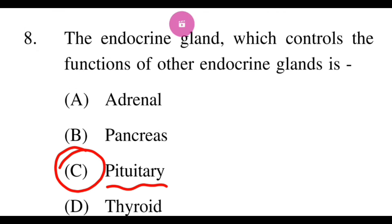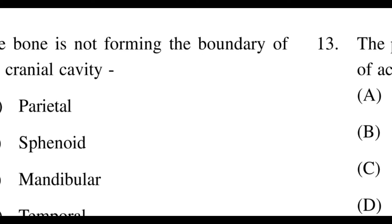Next question: Which bone is NOT forming the boundary of the cranial cavity? Options: A: parietal, B: sphenoid, C: mandible, D: temporal. The right option is C, mandible. The other three are all part of the skull and cranial cavity bones, except the mandible.